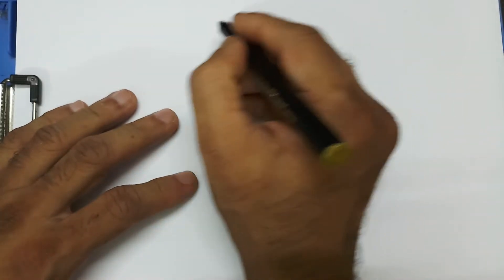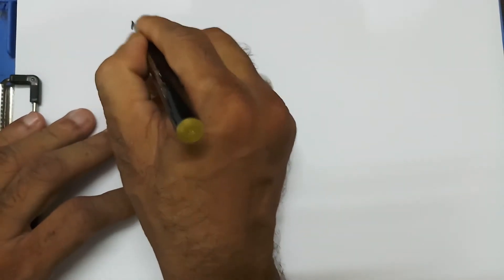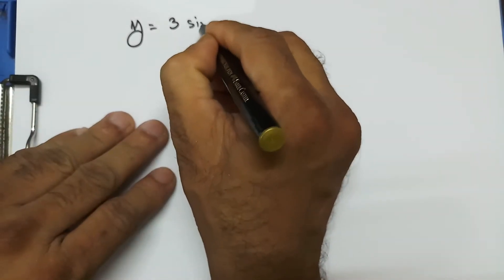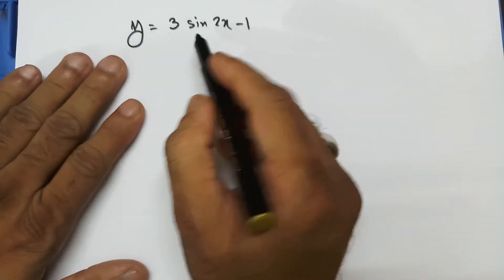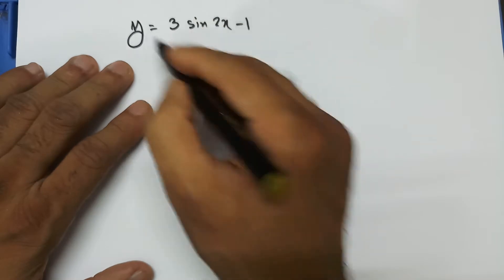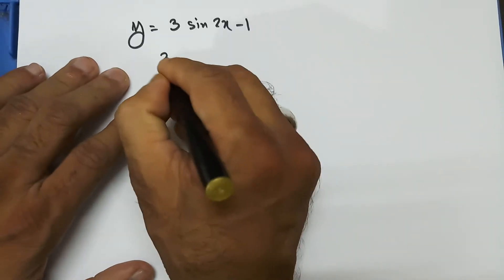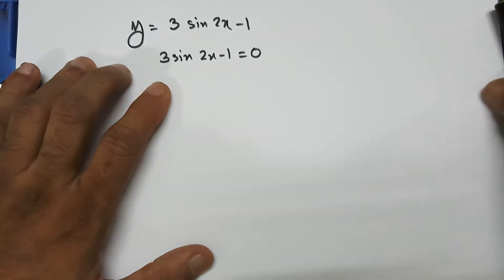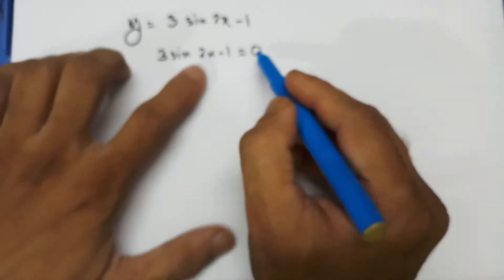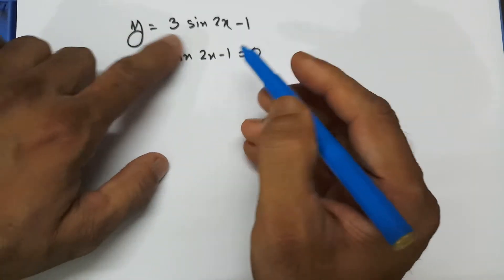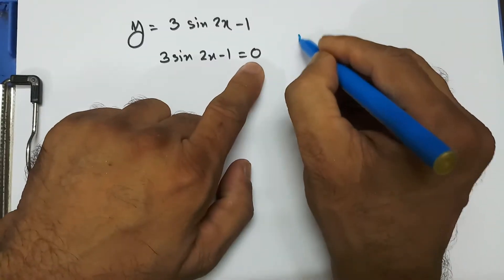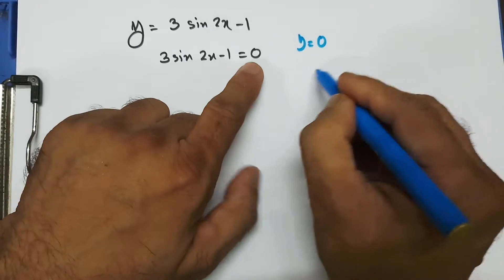Let's take this sine graph: y equal to 3 sine 2x minus 1. This is a trigonometric function, and I was asked to solve this one. When we are solving this, that means 3 sine 2x minus 1 equal to 0. That's what we need to solve. This is actually the combination of two equations — the trigonometric function 3 sine 2x minus 1, and y equal to 0.